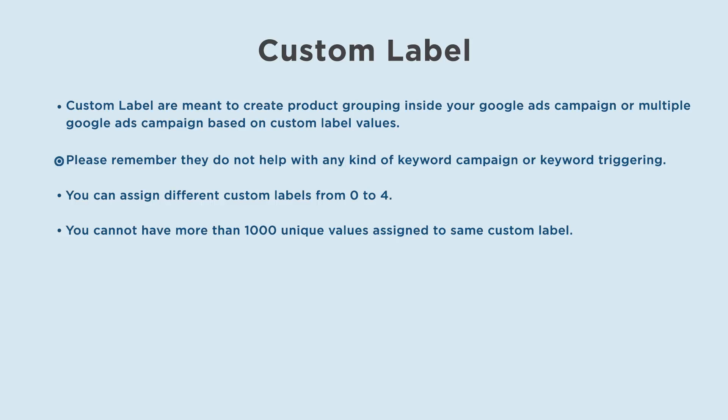Custom labels are meant to create product grouping inside your Google Ads campaign or multiple Google Ads campaigns based on custom label values. Please remember they do not help with any kind of keyword campaign or keyword triggering. You can assign different custom labels from zero to four, and you cannot have more than 1,000 unique values assigned to the same custom label.